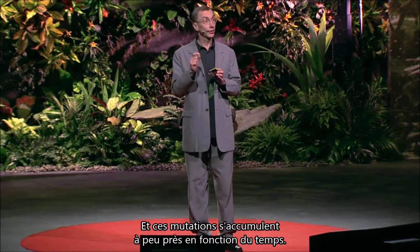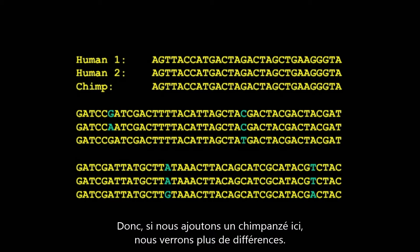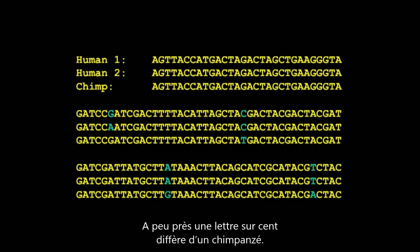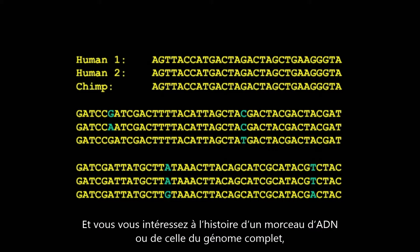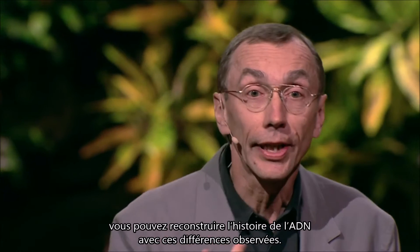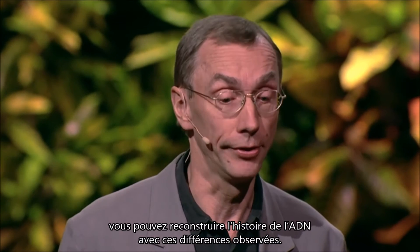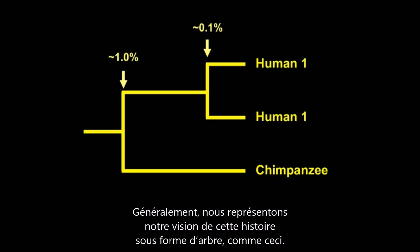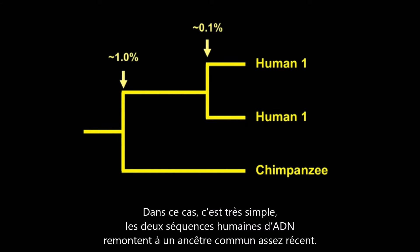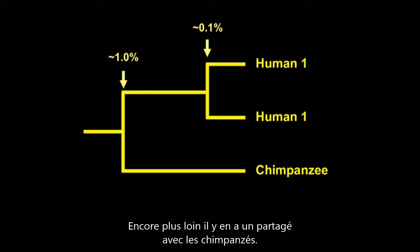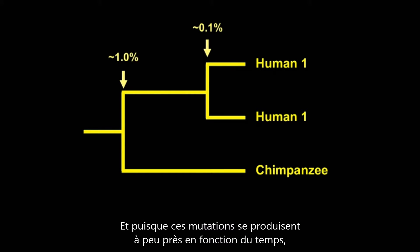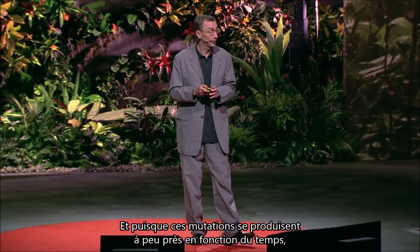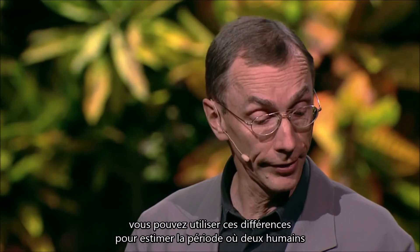These mutations accumulate approximately as a function of time. So if we add in a chimpanzee, we will see more differences — approximately one letter in a hundred will differ compared to a chimpanzee. And if you are interested in the history of a piece of DNA or the whole genome, you can reconstruct the history of the DNA with those differences you observe. We generally depict our ideas about this history in the form of trees. The two human DNA sequences go back to a common ancestor quite recently, and further back is the one shared with the chimpanzees.